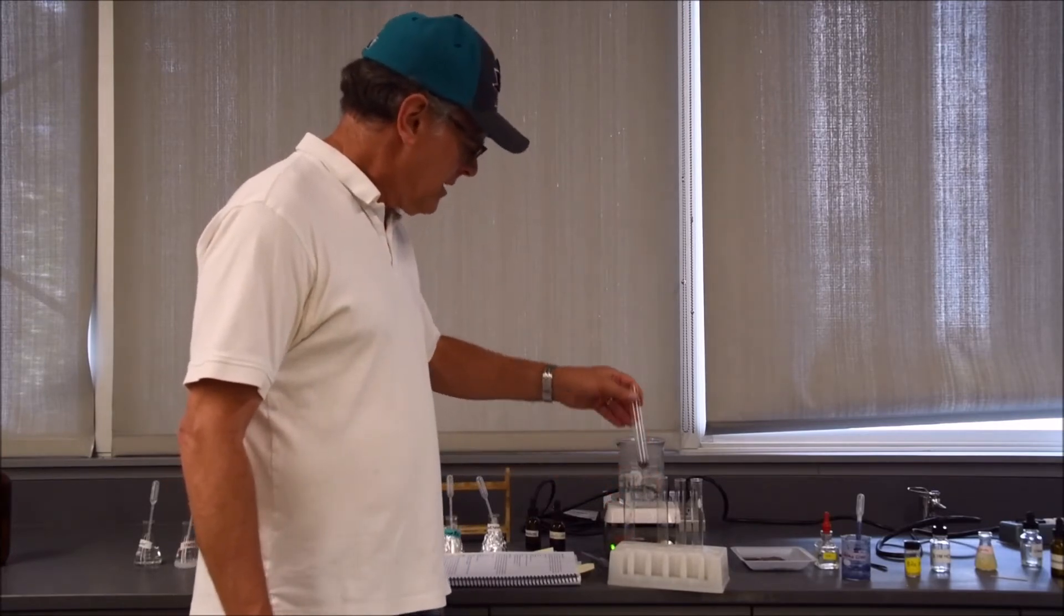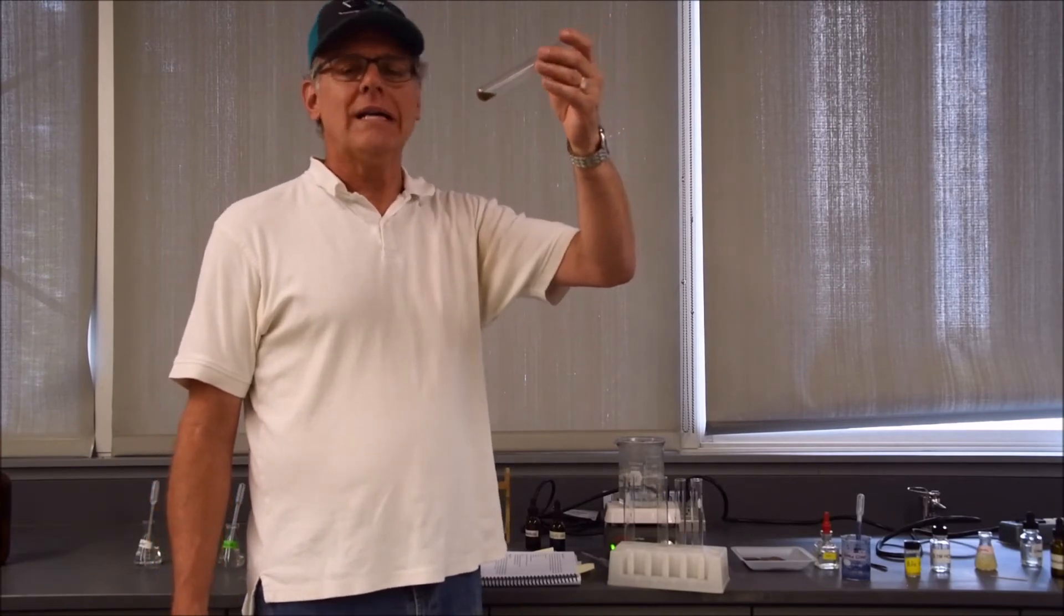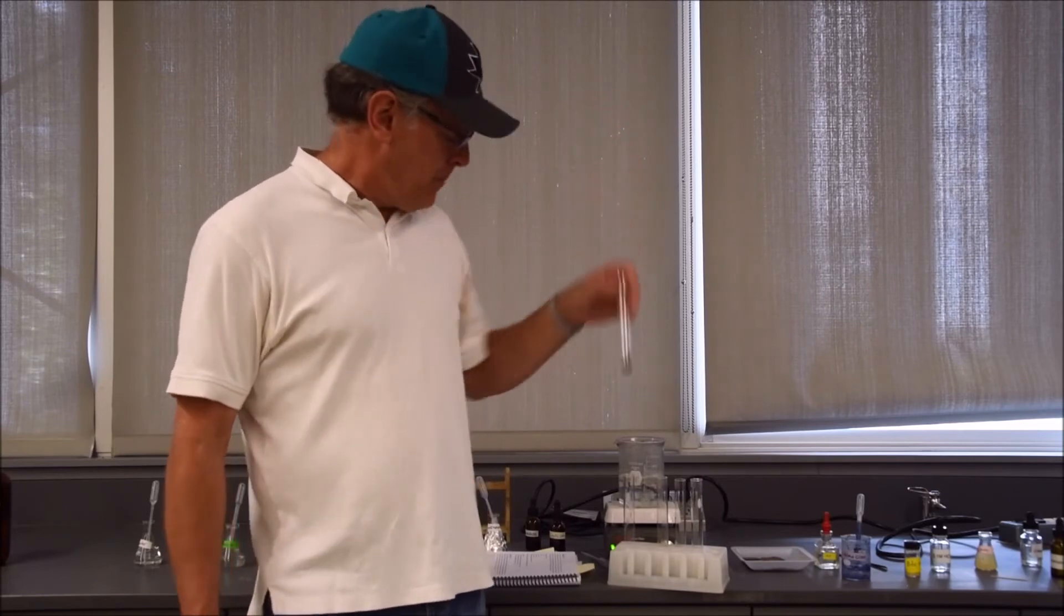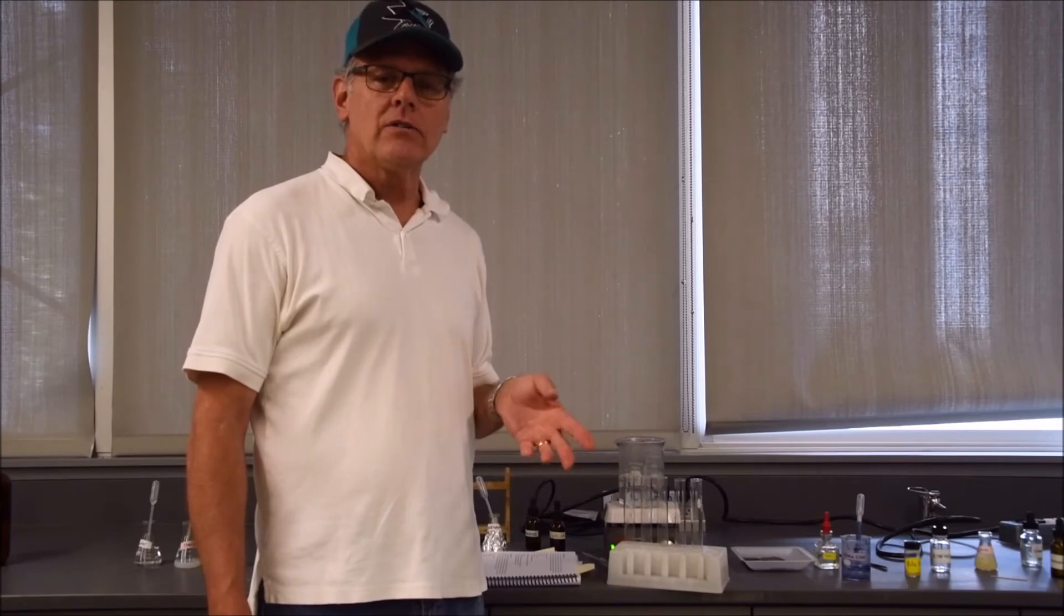Tube number two had starch in it, and this one changed just a little tiny bit to a greenish color. The Benedict's reagent is quantitative as well as qualitative. It tells us yes, there are monosaccharides present, but also how much. The darker the color, the more that are present.